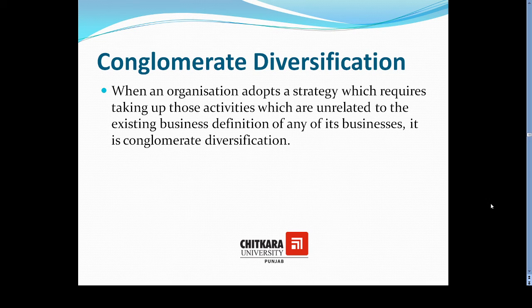For instance, if a business serving food and beverages is currently serving only Punjabi cuisines and is now thinking to serve Mexican cuisines to its customers, it is providing new products and services that are still related to its existing products — that is concentric diversification. This illustrates the difference between concentric and conglomerate diversification.